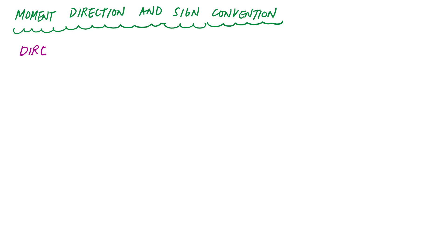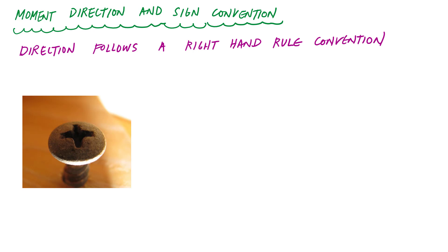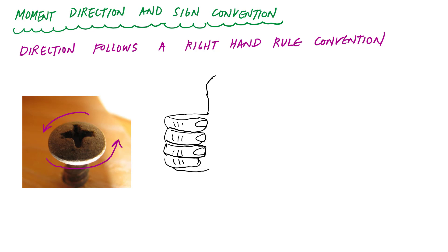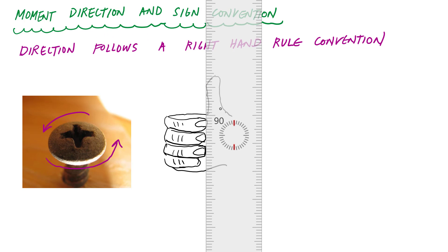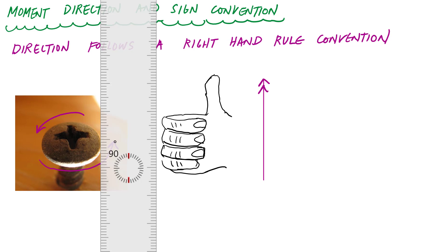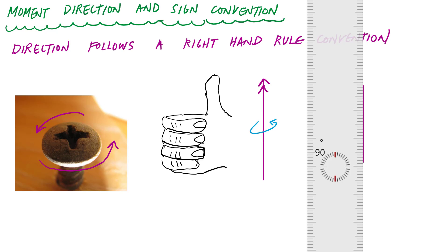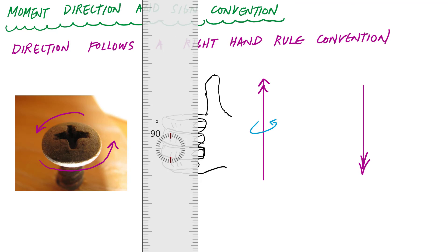The direction of a moment follows a right-hand rule convention. If I'm unscrewing the bolt, I'm turning counterclockwise. I curl my fingers in the direction of the rotation, and my thumb represents the direction of the moment vector. I represent this with a double-headed arrow pointing in the same direction as my thumb. If turning the other way, the double-headed arrow points down, indicating a curl in that direction.